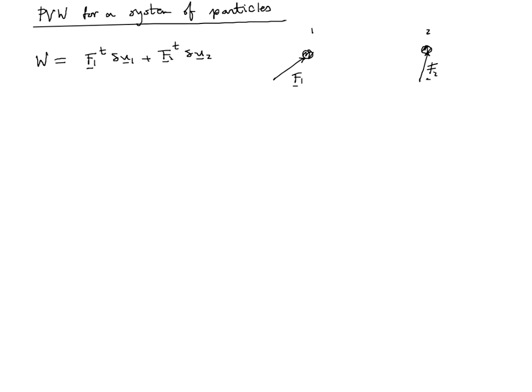The condition of equilibrium is that the total virtual work W equals zero. Since the two particles are completely independent of each other, delta U1 is independent from delta U2. As such, the conditions of equilibrium are F1 equals zero and F2 equals zero — the net force acting on each particle is zero. This is a consequence of the assumption that the two bodies move independently from each other.